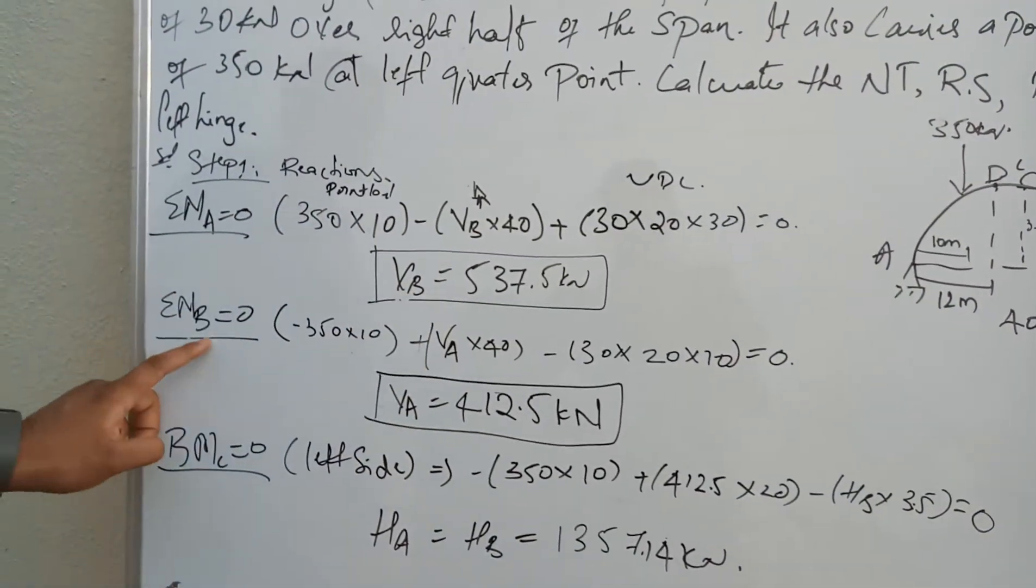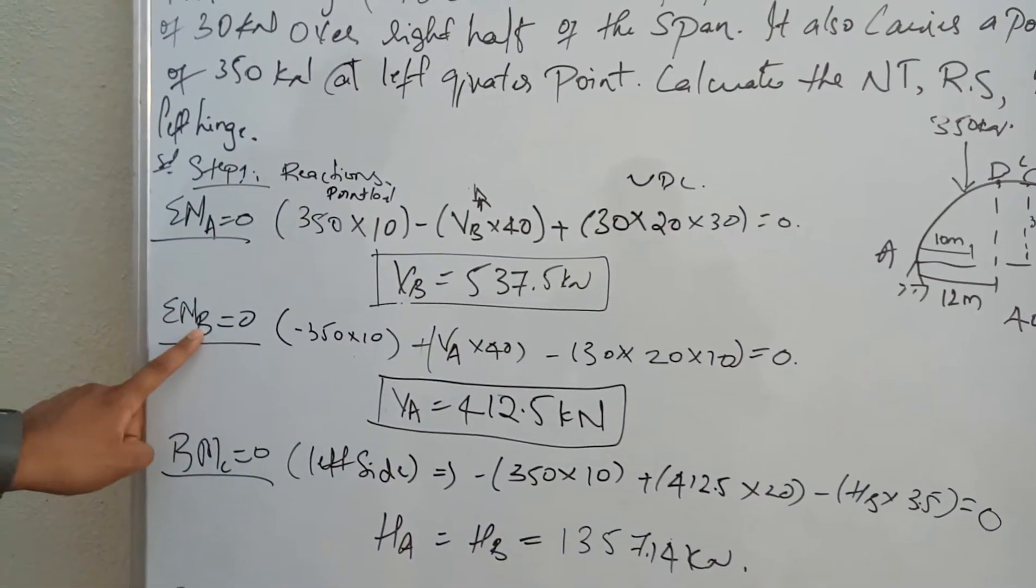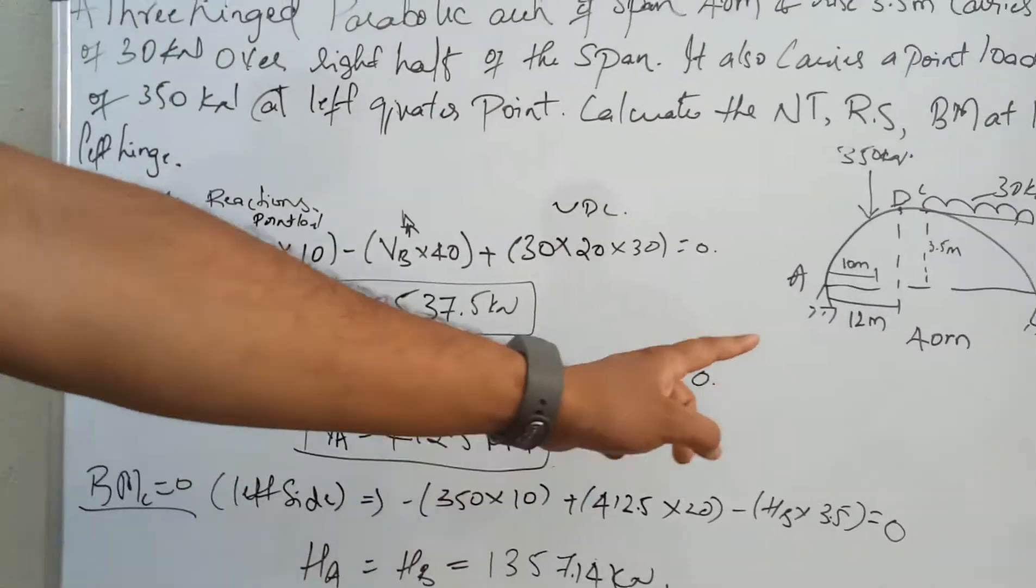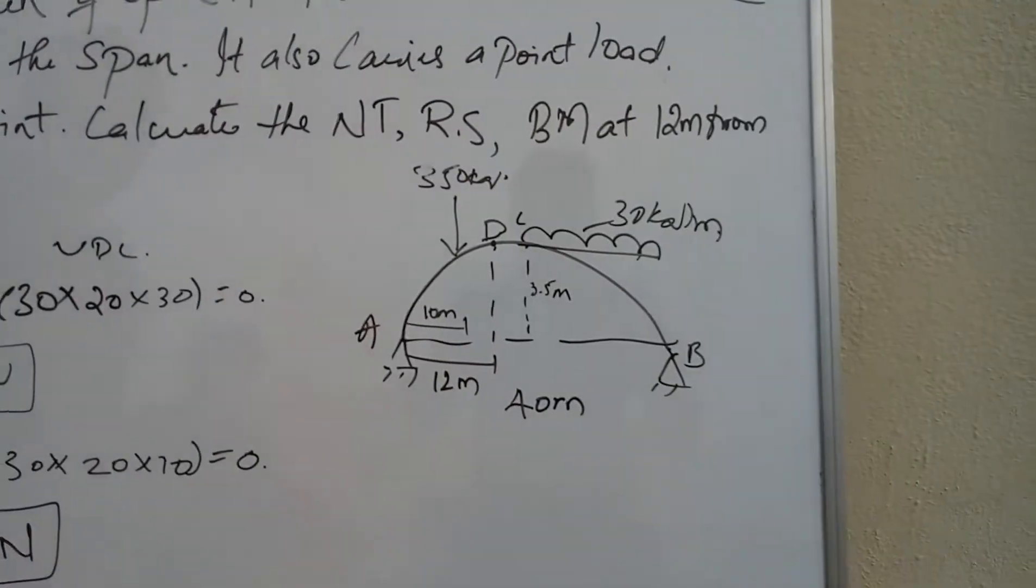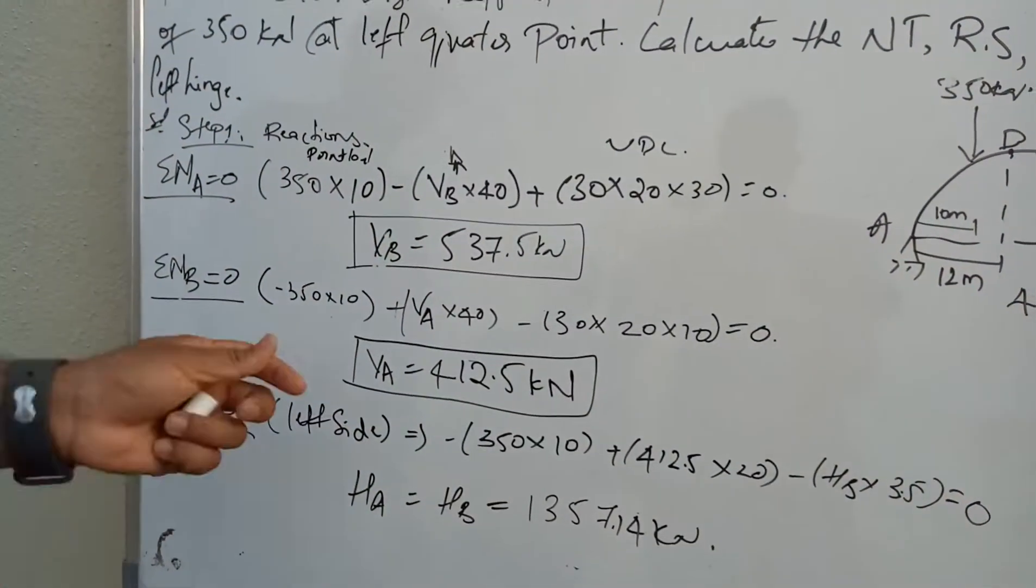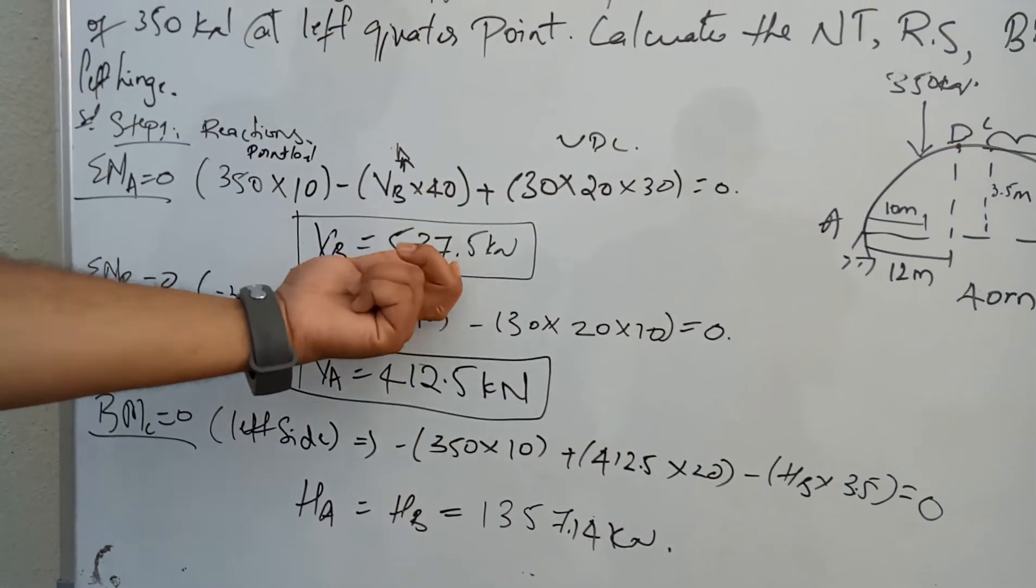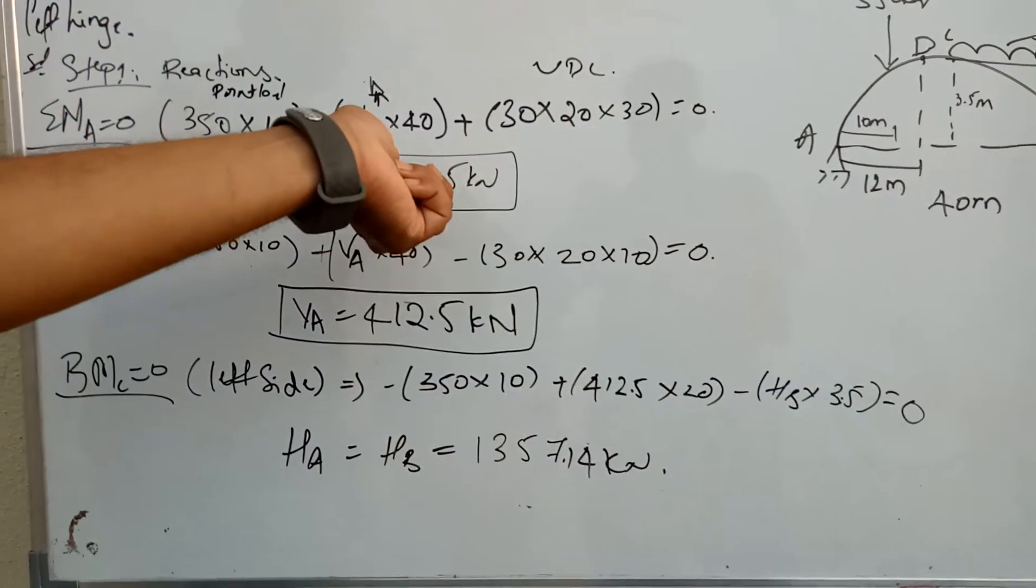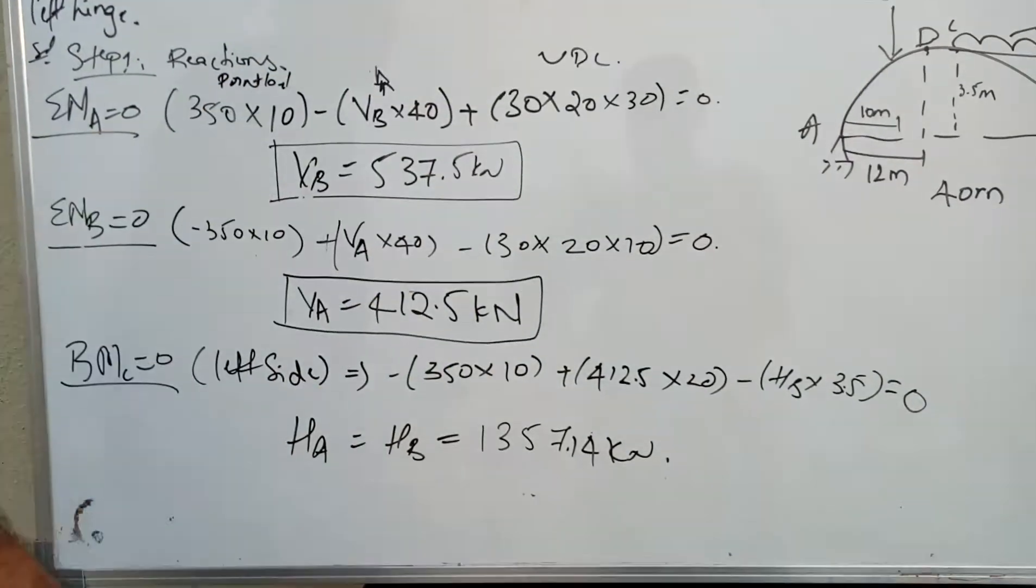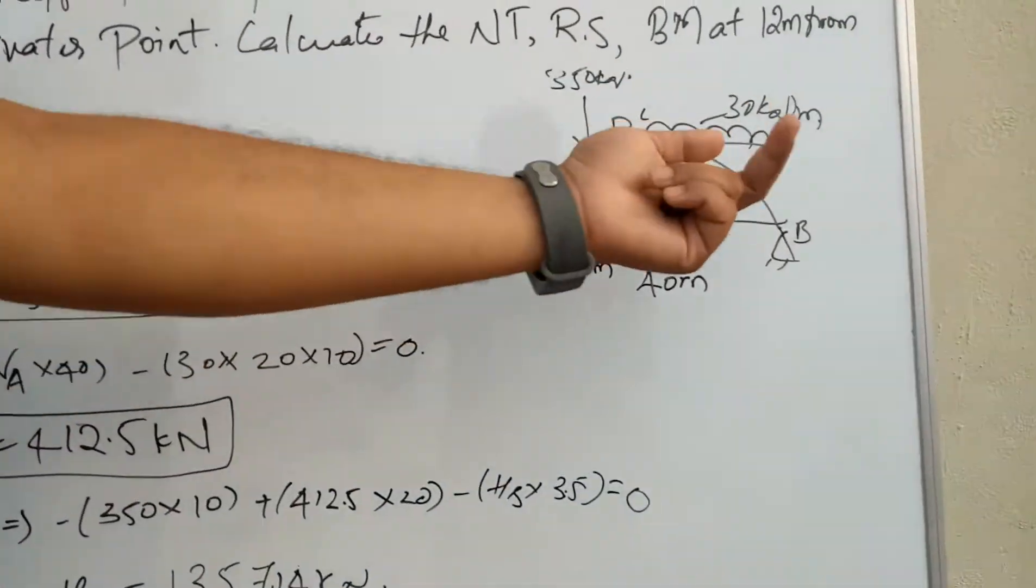Similarly, find sigma B equals zero and find the reactions VA and VB. We got VA equals 537.5 kilonewtons and VB equals 412.5 kilonewtons. So we got VB and VA.